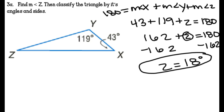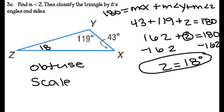Now classifying the triangle: we have angles of 18, 43, and 119. Do I have a right angle? No. Are they all acute? No — I have an obtuse angle, so I know it's an obtuse triangle. And since none of the angles are equal, none of the sides are equal. So this is an obtuse scalene — which happens to be the answer on three problems, just by accident.